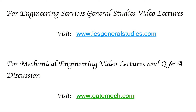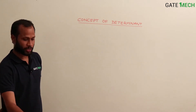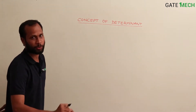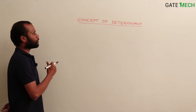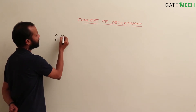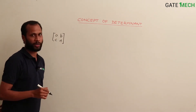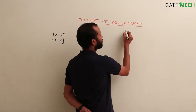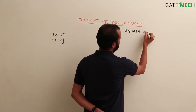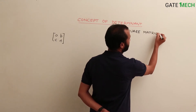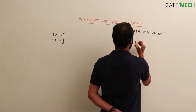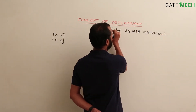Let us see what a determinant is and the significance or concept behind it. Say suppose a 2 by 2 matrix is there: a, b, c, d. A determinant is usually defined only for square matrices — please remember that. The reason why it is only defined for square matrices will be explained later when I tell you the significance.